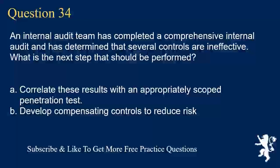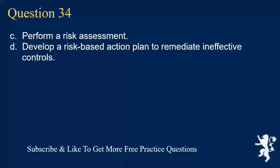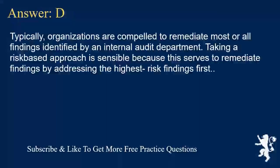Question 34. An internal audit team has completed a comprehensive internal audit and has determined that several controls are ineffective. What is the next step that should be performed? A. Correlate these results with an appropriately scoped penetration test. B. Develop compensating controls to reduce risk. C. Perform a risk assessment. D. Develop a risk-based action plan to remediate ineffective controls. Answer D. Typically, organizations are compelled to remediate most or all findings identified by an internal audit department. Taking a risk-based approach is sensible because this serves to remediate findings by addressing the highest-risk findings first.